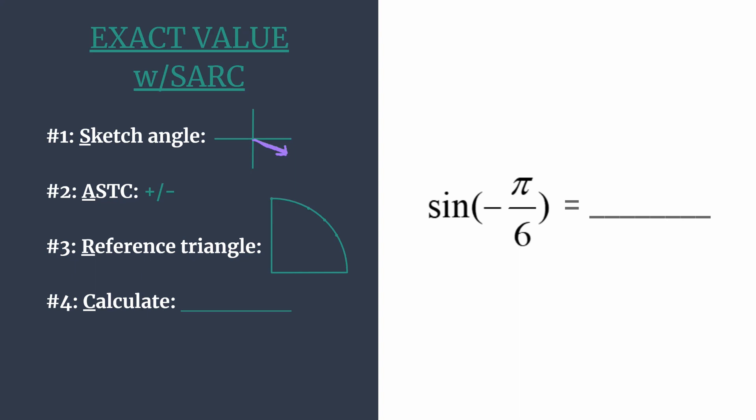Now if you weren't comfortable with negative angles you could always find an angle that is coterminal to negative pi over 6. So we'll quickly do a little scratch work for that. To find a coterminal angle all you need to do is add 2 pi radians to your angle because that's a full rotation.